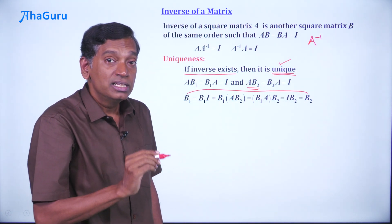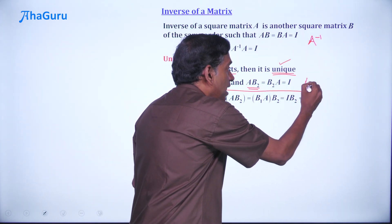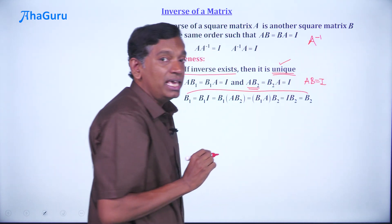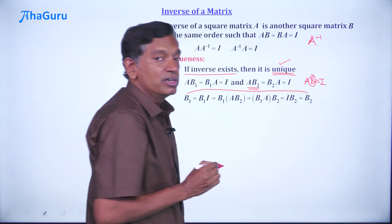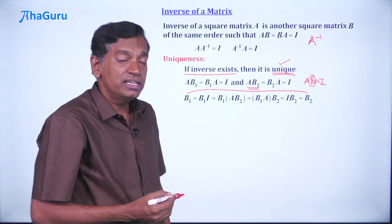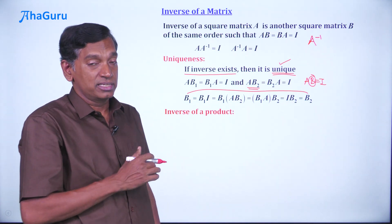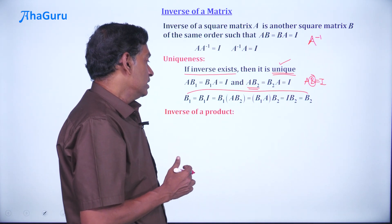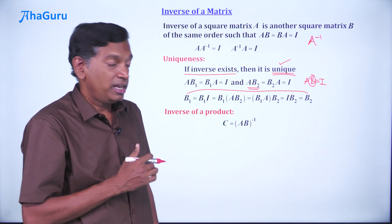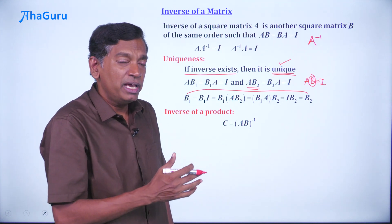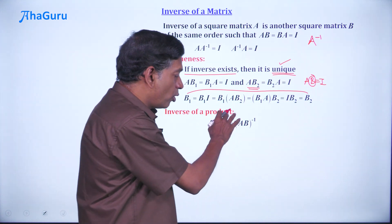If you have an inverse, there is only one such matrix that exists. In general, if you have a matrix A and you are able to show AB equals I, you can immediately claim that B is the inverse of A. Now, what are some other ideas related to inverse? Suppose you want to find the inverse of a product AB. The first thought may be A inverse B inverse, but let us see what actually happens.